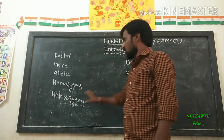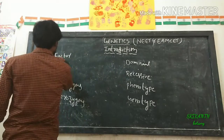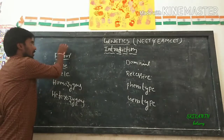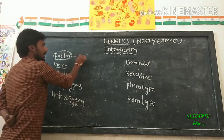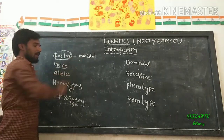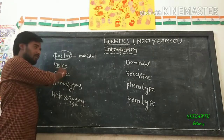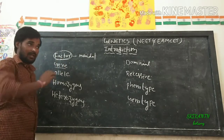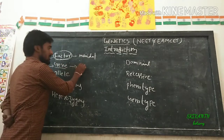First of all, factor. Before inventing the gene, the unknown unit was called as factor by Mendel. The factor term was given by Mendel. Before discovering the gene, the gene was called as factor. Later, the factor was called as gene by Johansson.